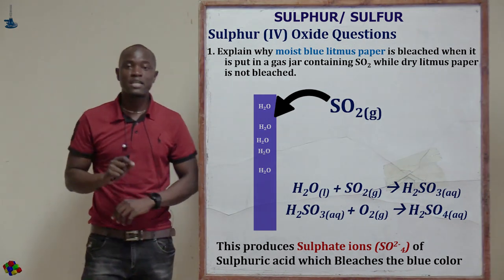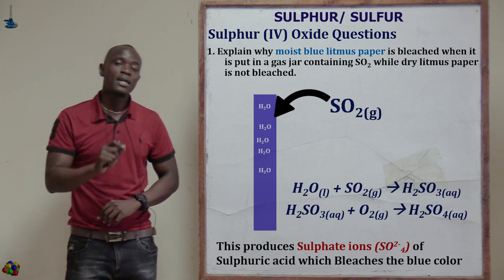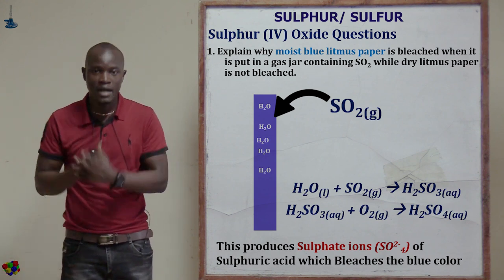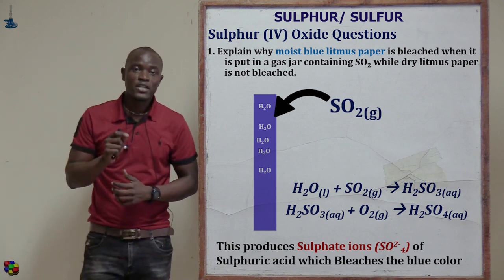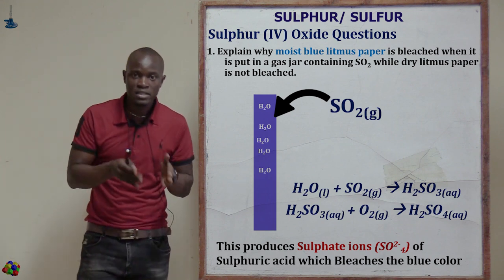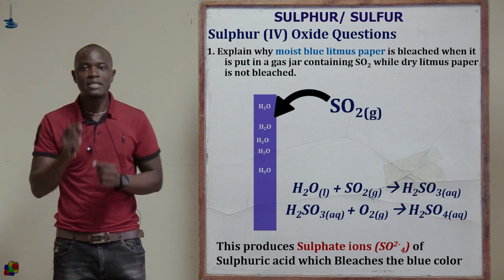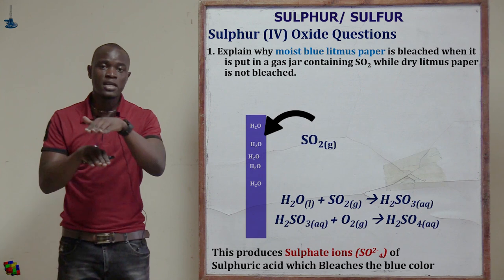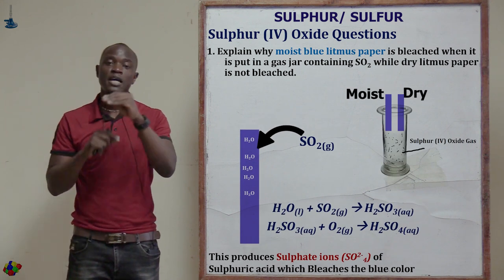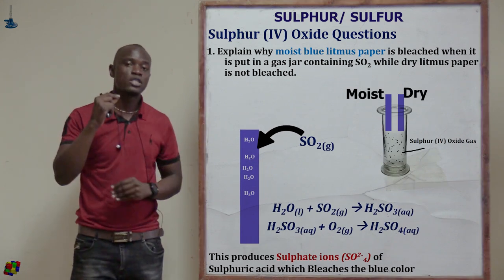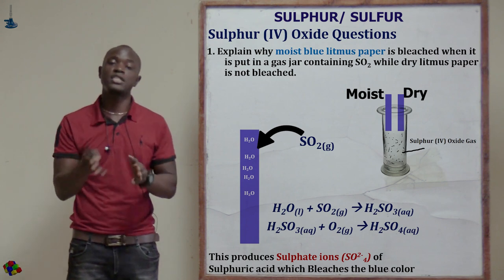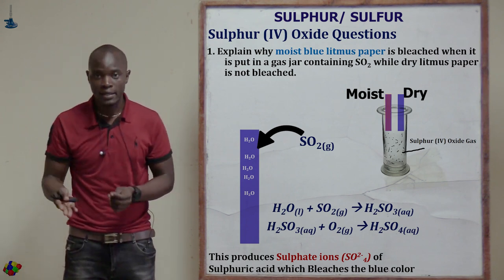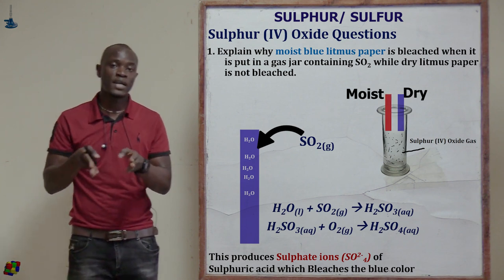The sulfuric acid formed will then dissociate, forming hydrogen ions and sulfate ions. The sulfate ions that are formed are oxidized while the dye is reduced to a colorless material immediately. The hydrogen ions are the ones which will then change the blue litmus paper color from blue to red, indicating the presence of an acidic medium.